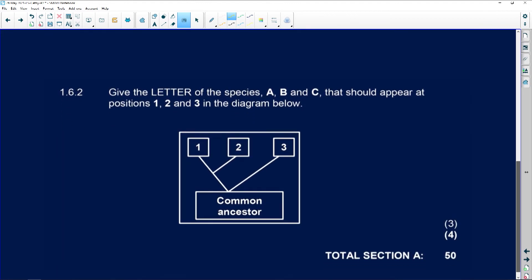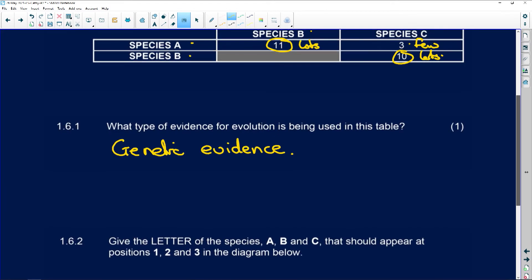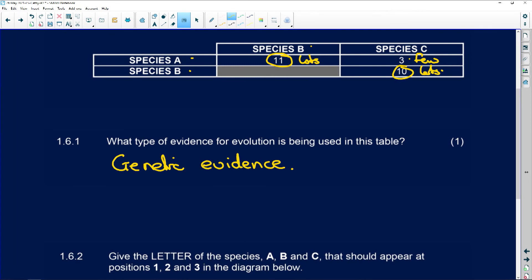Give the letter of the species A, B, and C that should appear at positions one, two, and three in the diagram. Well, I can tell you now, B was completely different from A, and they were only a little bit different from C.